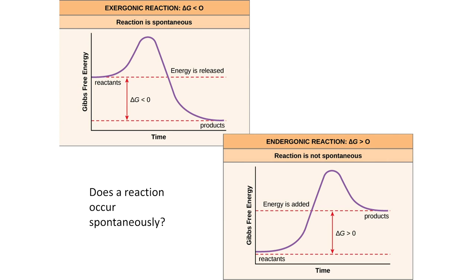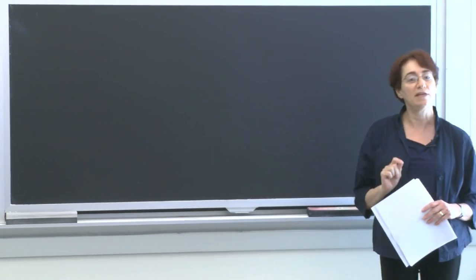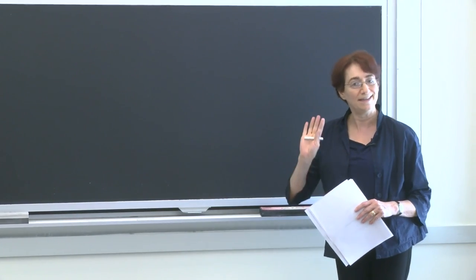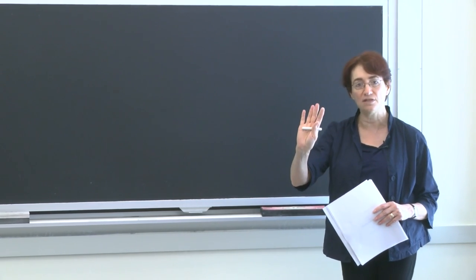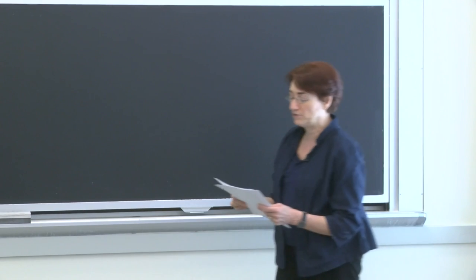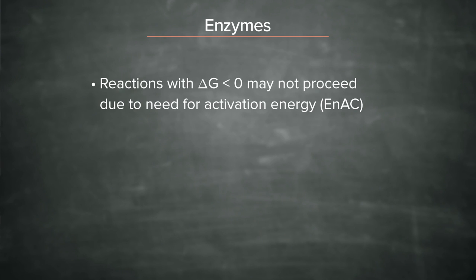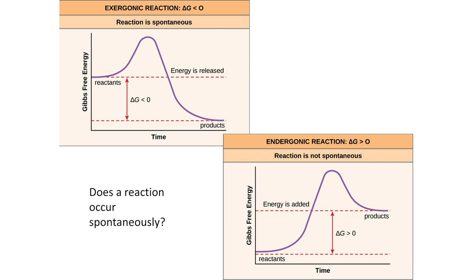But there is a catch here. I mentioned that even if delta G is negative, sometimes a reaction will not proceed. It needs a little push before it will proceed. And the little push is energy, and it's called activation energy. So you may need activation energy even with delta G negative less than zero. This is called an energy barrier.